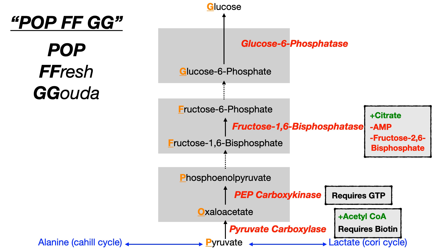Like I said at the start of this video, not a whole lot to know for gluconeogenesis. The big takeaways are: it's glycolysis in reverse with the exception of 'Pop Fresh Gouda,' the rate-limiting enzyme is fructose 1,6-bisphosphatase, and know the regulation shown on the right side of this slide. That's all you need to know to get every gluconeogenesis question correct on USMLE or COMLEX.